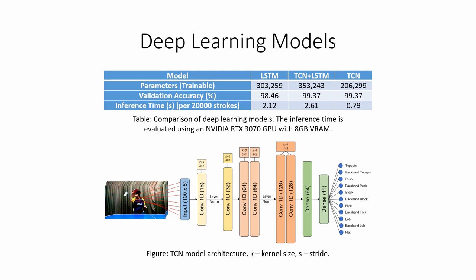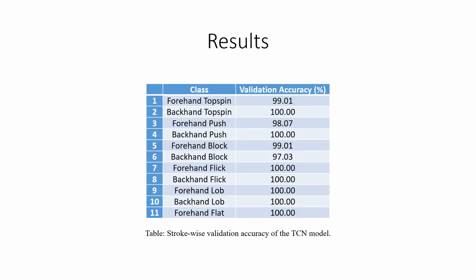The TCN model architecture built is as shown on screen. As shown in the figure, we obtained a high degree of accuracy when classifying each individual stroke. An accuracy of 99.37% across all 11 strokes was obtained using the TCN model developed.